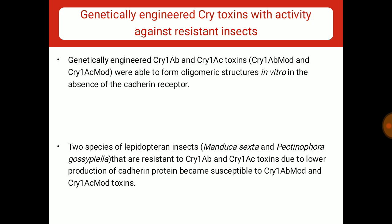Now, genetically engineered cry toxins with activity against resistant insects. Genetically modified cry 1-AB and cry 1-AC toxins, which are also called cry 1-AB mod and cry 1-AC mod, lack a helix alpha-1 region and form the oligomeric structures without first interacting with the cadherin receptor. Therefore, the oligomer contacts the second receptor and kills the larvae, even if the cadherin protein is mutated or absent in the larvae gut. In modified toxins ki wajah se, two species of Lepidopteran insects that are resistant to cry 1-AB and cry 1-AC toxins due to lower production of cadherin protein became susceptible to cry 1-AB mod and cry 1-AC mod toxins.